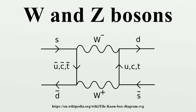The W and Z bosons are the elementary particles that mediate the weak interaction. Their symbols are W+, W-, and Z. The W bosons have a positive and negative electric charge of one elementary charge respectively and are each other's antiparticles. The Z boson is electrically neutral and is its own antiparticle. The three particles have a spin of one, and the W bosons have a magnetic moment, while the Z has none.